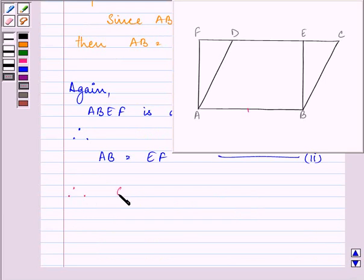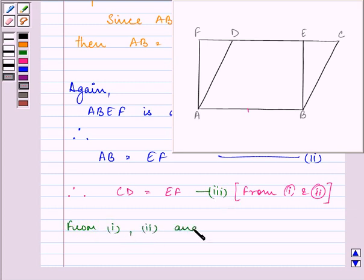Therefore, we can say that CD is equal to EF, as they both are equal to the same side. From equations 1 and 2, we can say that CD is equal to EF. Let this be the third one. From 1, 2 and 3, we have AB plus CD is equal to AB plus EF. And let this be the fourth equation.